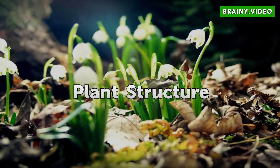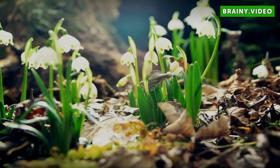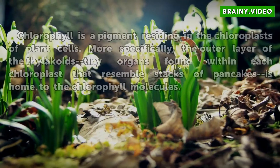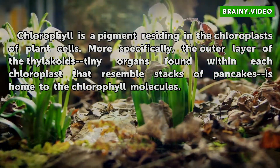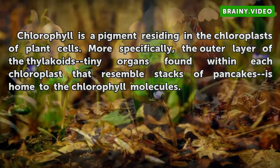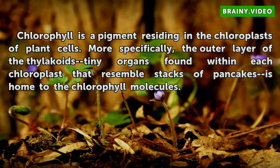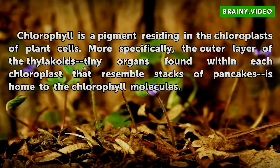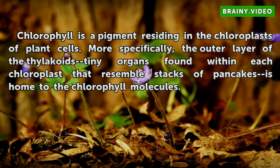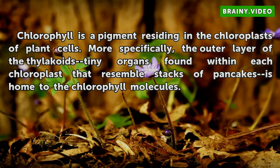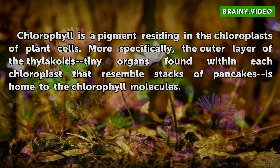Plant Structure. Chlorophyll is a pigment residing in the chloroplasts of plant cells. More specifically, the outer layer of the thylakoids — tiny organs found within each chloroplast that resemble stacks of pancakes — is home to the chlorophyll molecules.